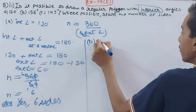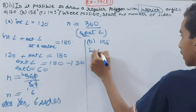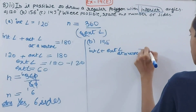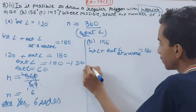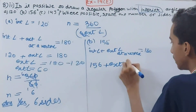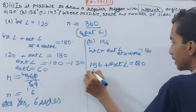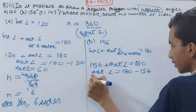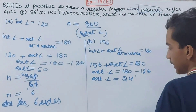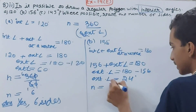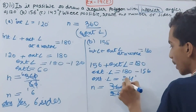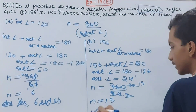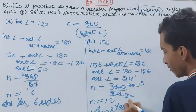For part b, the interior angle is 156 degrees. Interior angle plus exterior angle at a vertex equals 180 degrees. So the exterior angle equals 180 minus 156, which is 24 degrees. The number of sides n equals 360 divided by 24. Cancelling by 12 gives 30 divided by 2, so n equals 15. The answer is yes, you can make a polygon and it will have 15 sides.